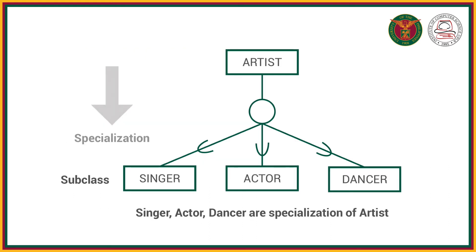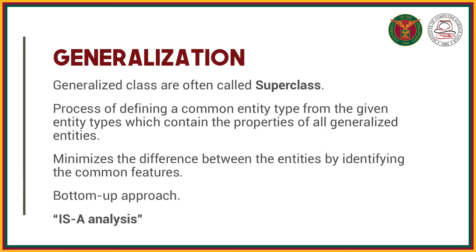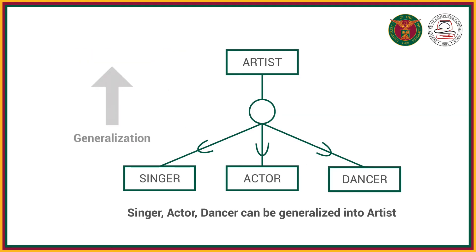So specialization is a top-down approach. On the other hand, we have generalization. Basically, you have subclasses and generalize them into a superclass. The goal is to minimize the difference between entities by identifying their common features — just like what we did in our first example with person as a superclass. So generalization is a bottom-up approach.